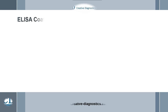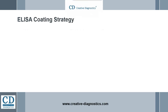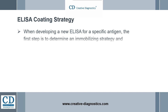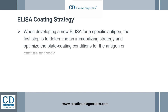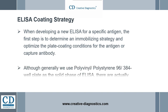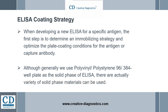When developing a new ELISA for a specific antigen, the first step is to determine an immobilizing strategy and optimize the plate coating conditions for the antigen or capture antibody. Although generally we use polyvinyl or polystyrene 96-well plate as the solid phase of ELISA, there are actually a variety of solid phase materials that can be used.